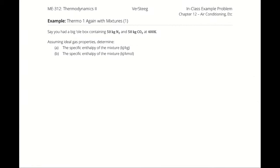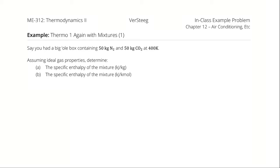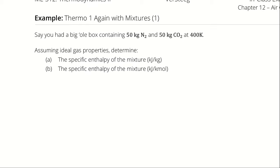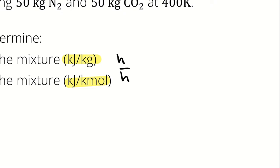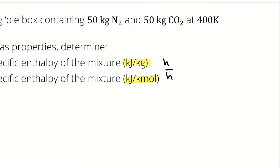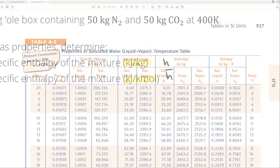On to our next example problem. Say you had a box containing 50 kg of nitrogen and 50 kg of carbon dioxide at 400 Kelvin. We want to figure out the specific enthalpy of the mixture on a mass basis and a molar basis — that is, lowercase h and lowercase h-bar. To find the specific enthalpy of the mixture, we're going to use the specific enthalpy of each of the individual species, which means we'll need to go into our property tables.